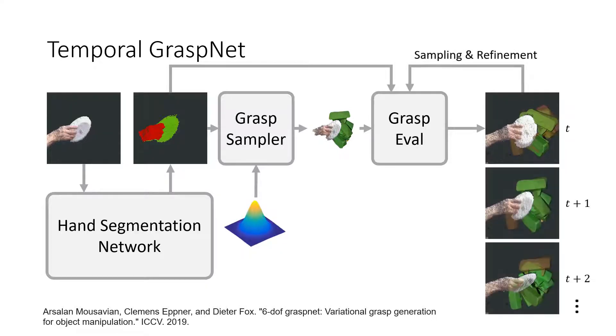To generate temporally consistent grasps for smooth robot motion, we randomly perturb the grasps from the previous frame and use GraspEvaluator to score the perturbed grasps and keep those with high scores. Note that we remove all the grasps that are colliding with the hand point cloud to avoid the robot pinching the human's hand.